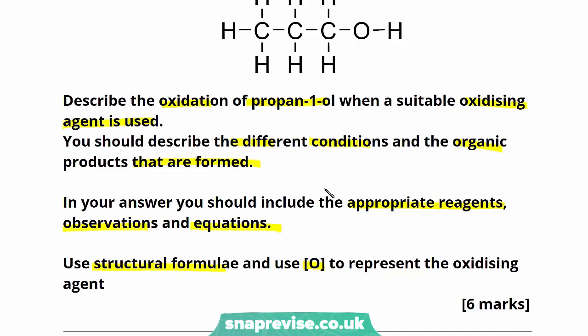In order to oxidize our alcohols we require an oxidizing agent. We're going to use acidified potassium dichromate, although acidified sodium dichromate is an alternative reagent. We know that with our primary alcohols we can form aldehydes and carboxylic acids depending on the conditions used. If we immediately distill the reaction we'll form our aldehyde, and if we allow the reaction to go to completion by heating under reflux we'll form the carboxylic acid. We must remember to use structural formulae and represent the oxidizing agent as O in square brackets.